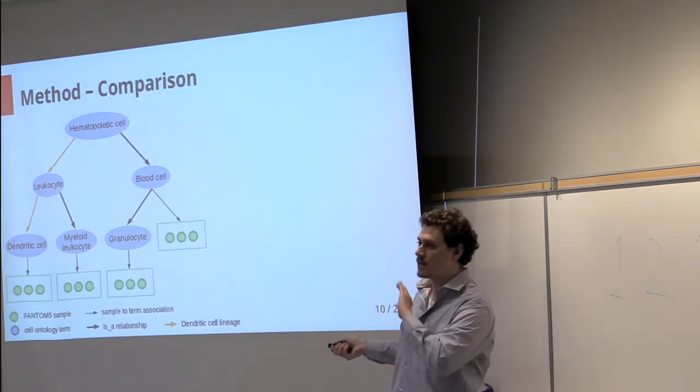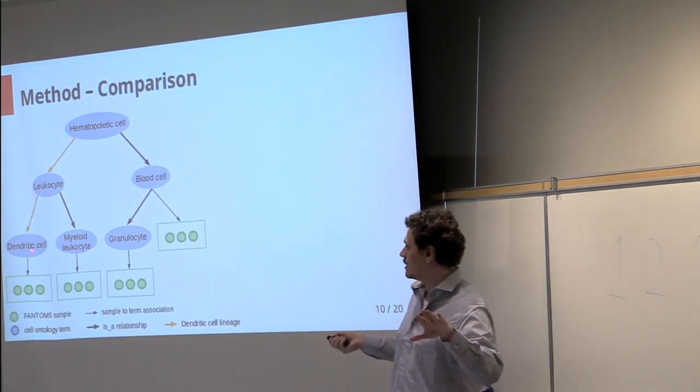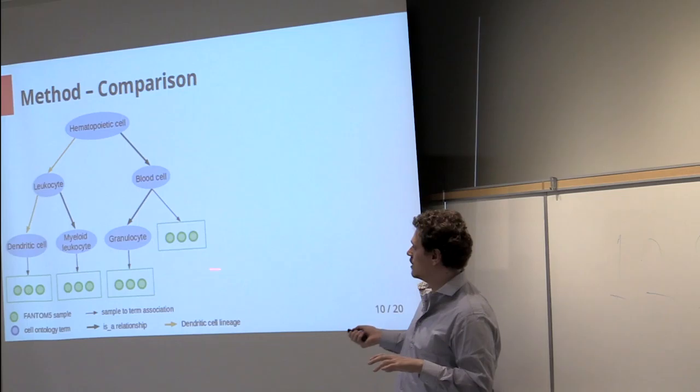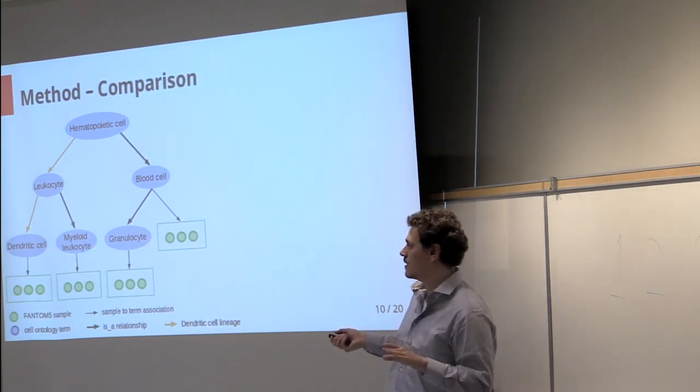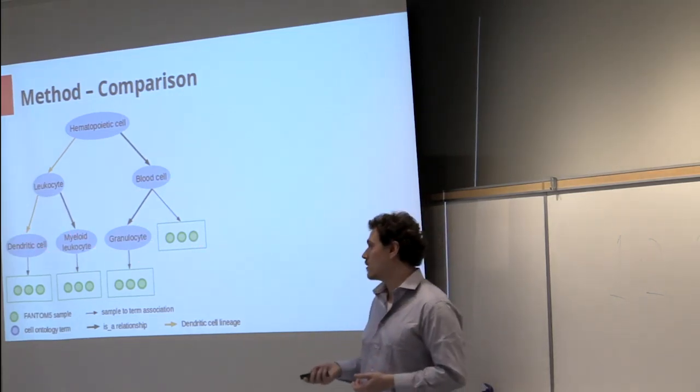And because they share samples, they have samples in common, we exclude it and we compare dendritic cells to everything else, which is in short comparing dendritic cells to all its cousins in the cell ontology.